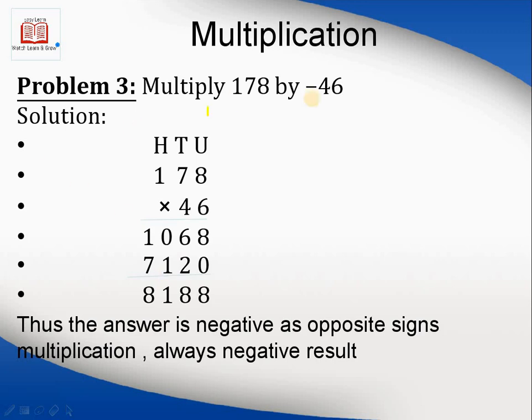Another case: multiply 178 by a negative number. If the number is negative, don't write the negative sign here. Just multiply and take it as a positive number, but at the end, the answer is negative. The process is very simple: 6 times 8 is 48. Write 8 here and 4 here. 6 times 7 is 42. Just add the carry.